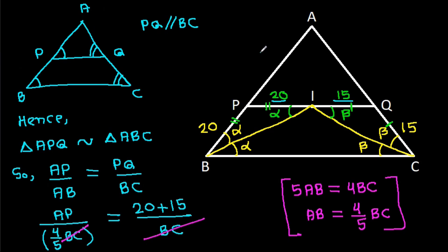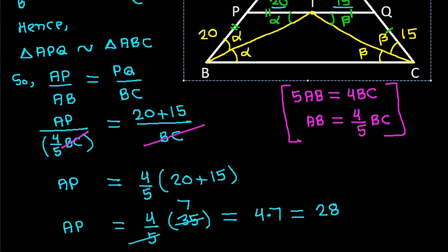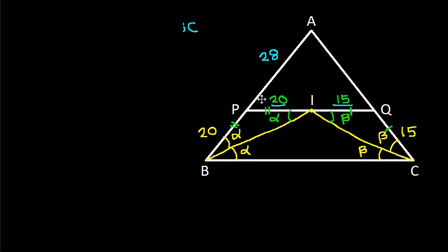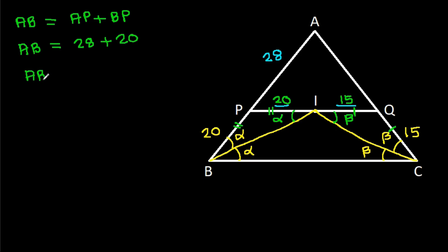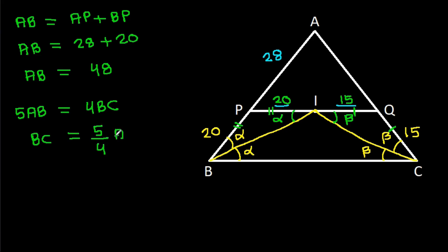So AP is 28. And AB equals AP plus BP, so AB equals 28 plus 20, which is 48. We have been given that 5AB equals 4BC, so BC equals 5 by 4 times AB equals 5 by 4 times 48. Since 48 divided by 4 is 12, BC equals 5 times 12, which is 60.